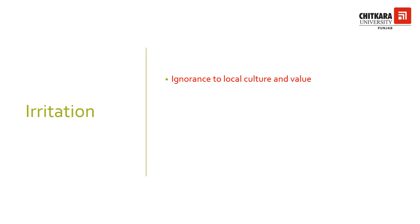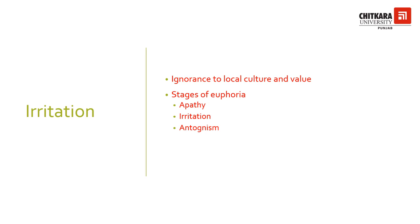Irritation: When cultural or religious values get ignored, there can be a euphoria, and this has three stages. First, a feeling of lack of interest, which is apathy. Second, a feeling of being annoyed with the people who are coming in, which is called irritation. And finally, a public display of opposition may also occur, which is antagonism. To read about this in detail, one can refer to Doxey's Irridex.